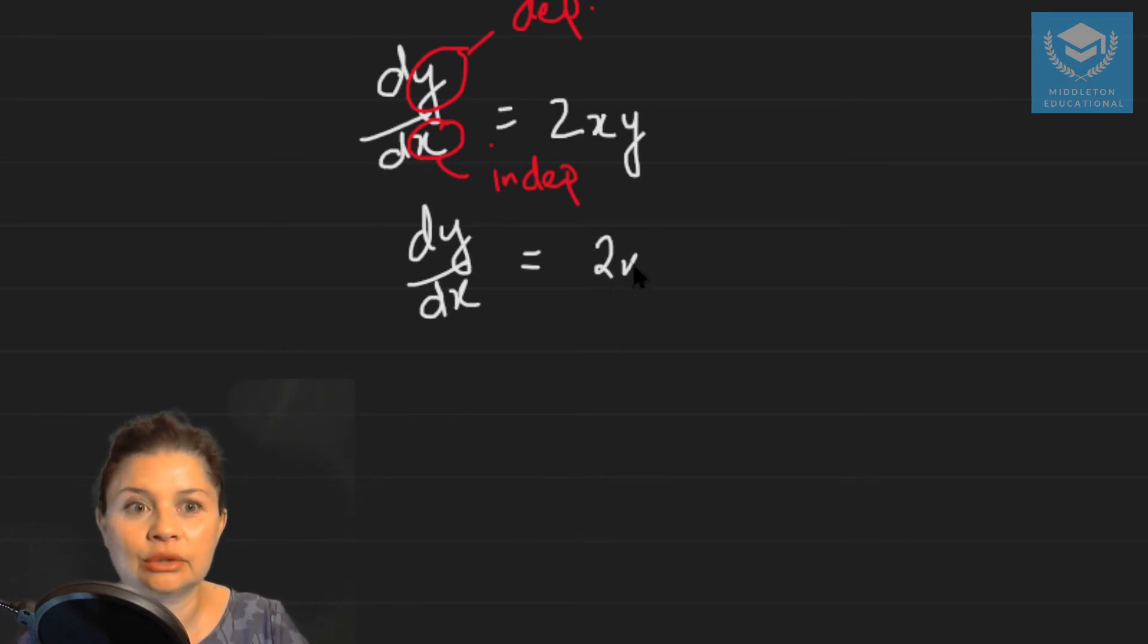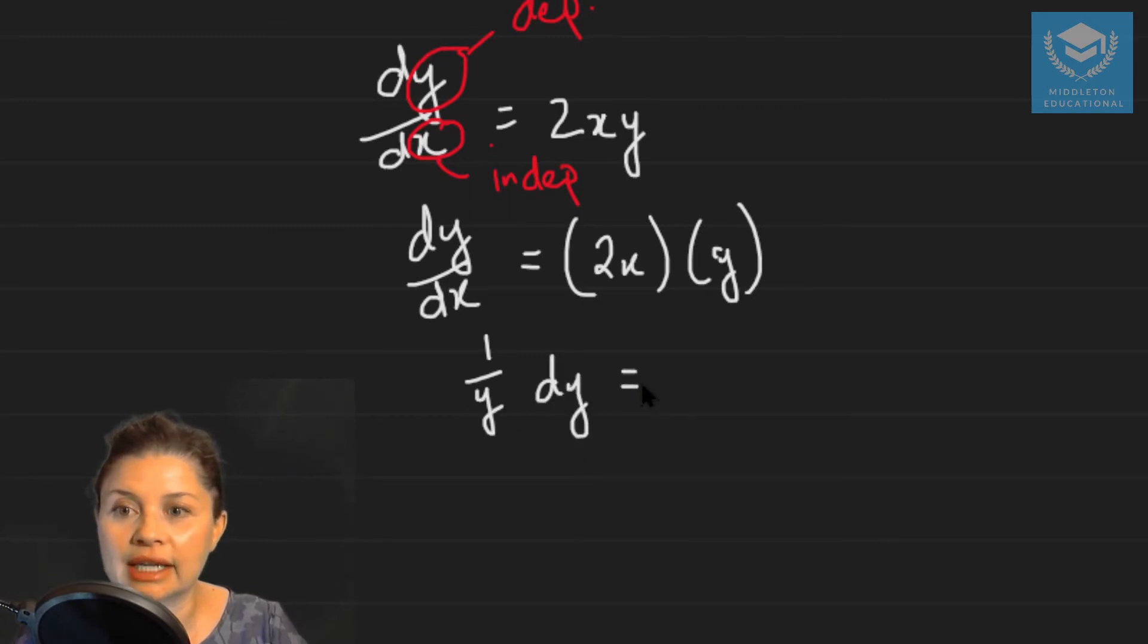So I'm first going to write this as 2x times y to show you how we separate those variables. And then I can say I put all my dependent on the left hand side and all the independent on the right hand side like this.